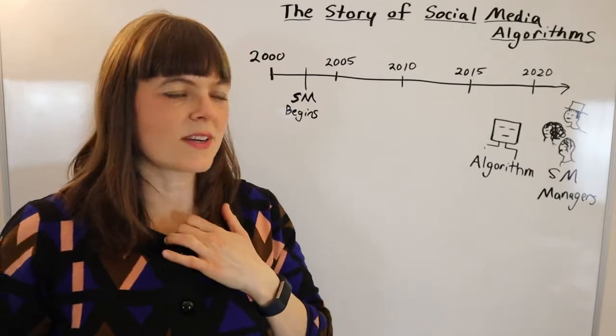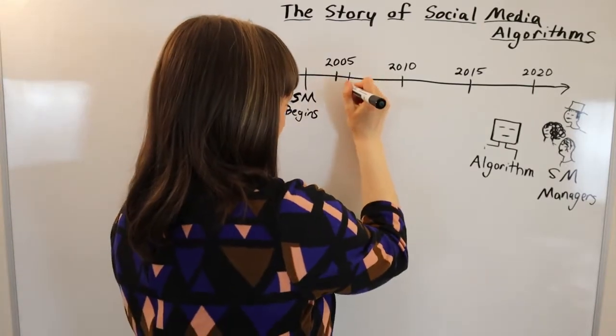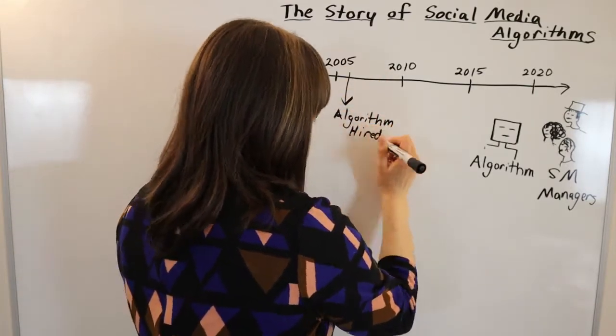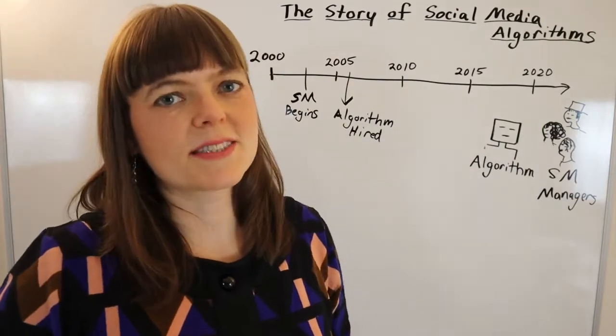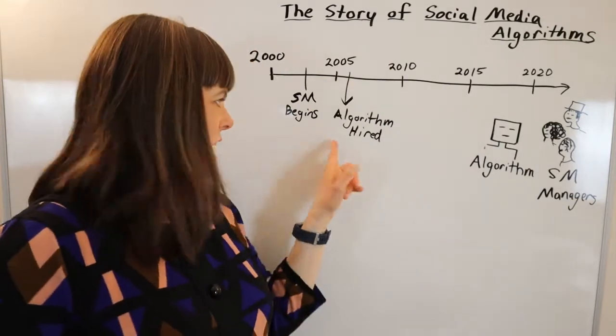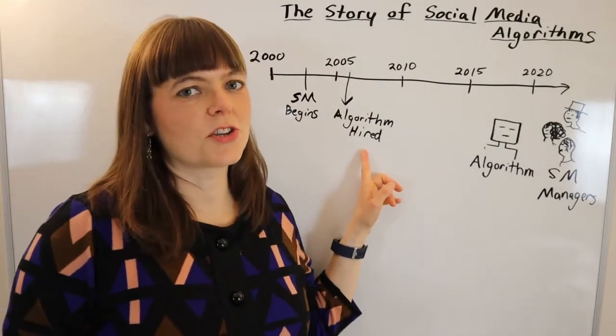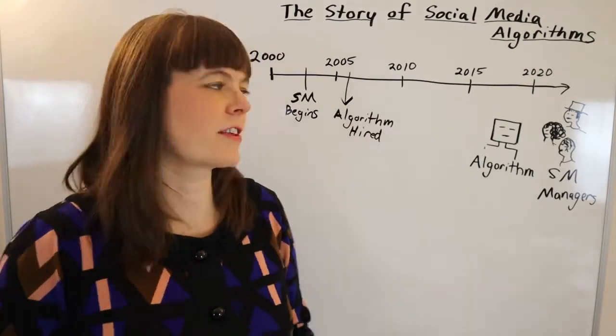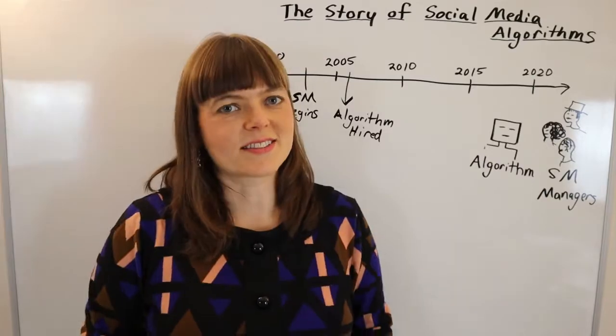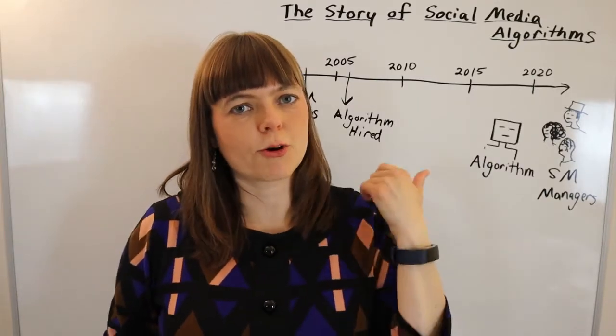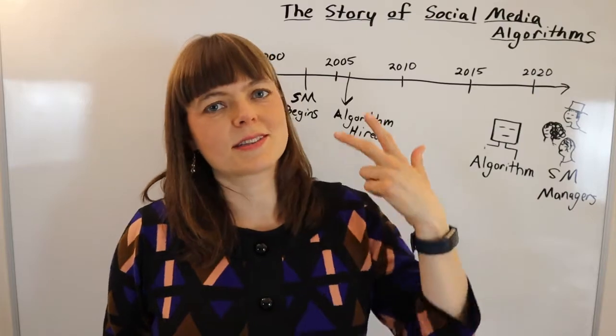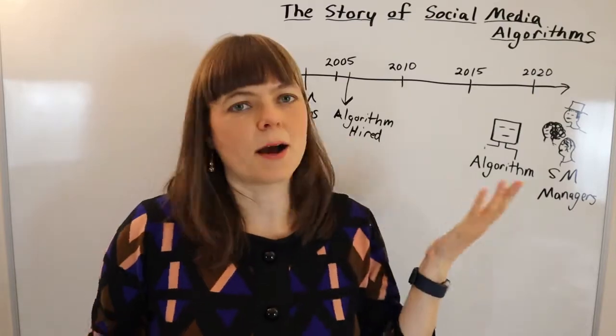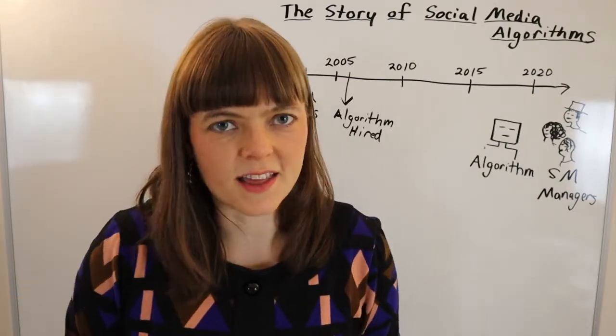At some point along the way, the algorithms came onto the scene. These algorithms were given a specific job, and the job they were hired to do was the same job we're all hired to do, which is to make money for the social media platforms. And that's done through maximizing time on platforms, clicks on advertisements, engagement, and other things like that.